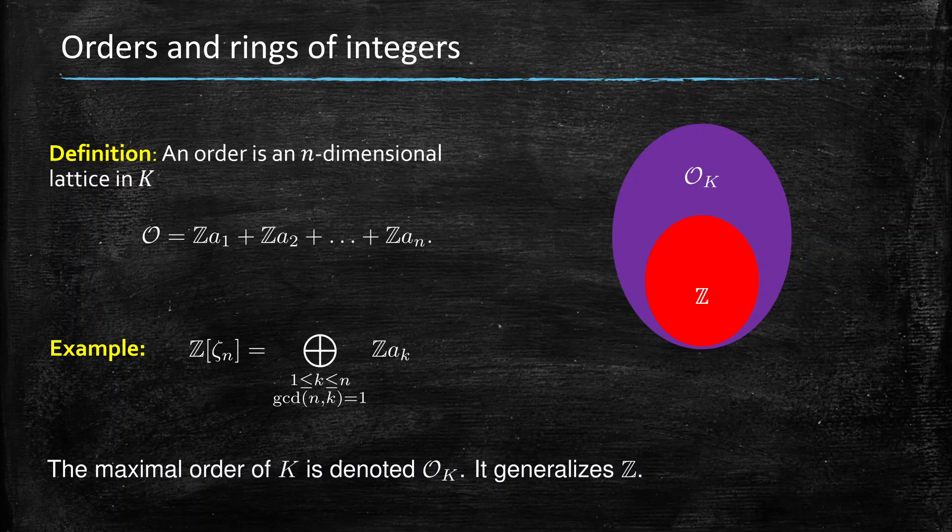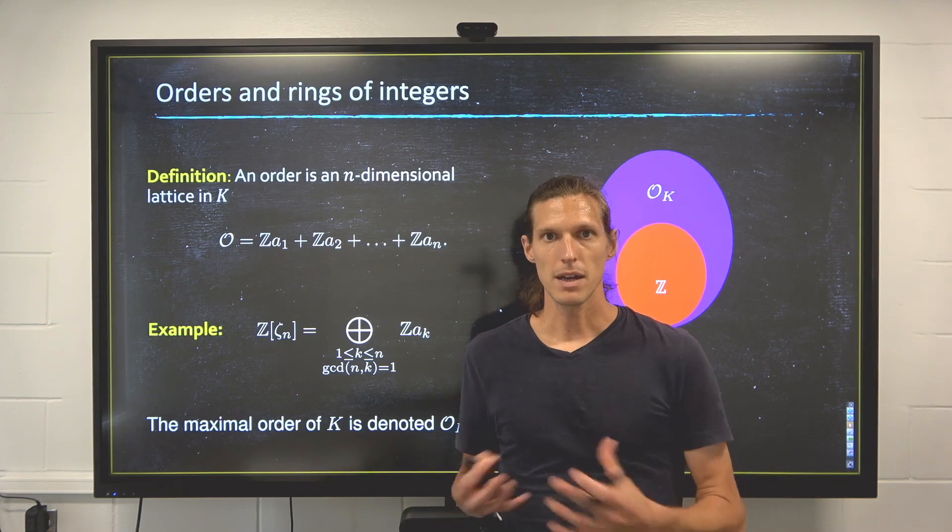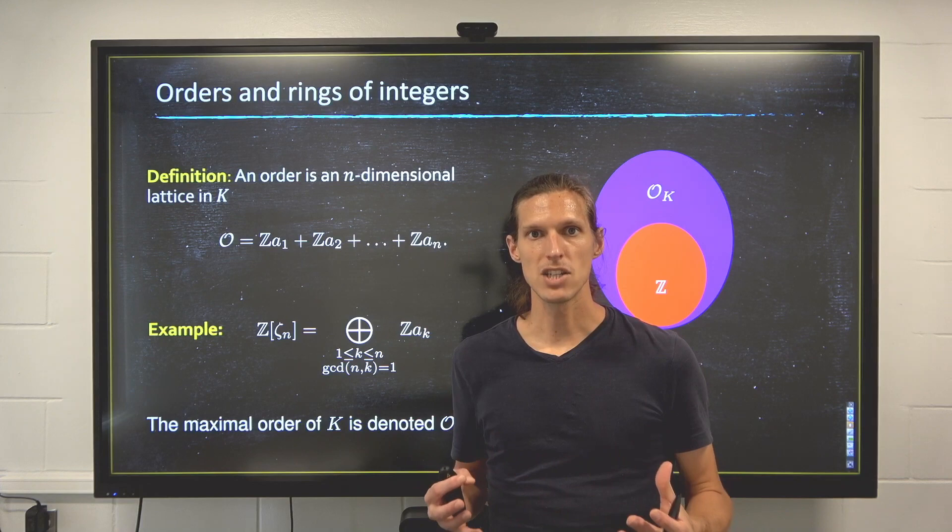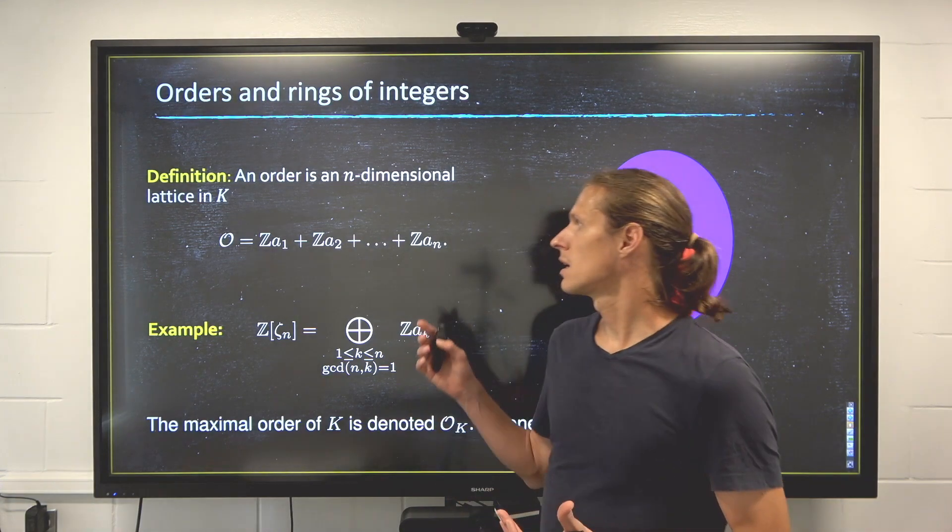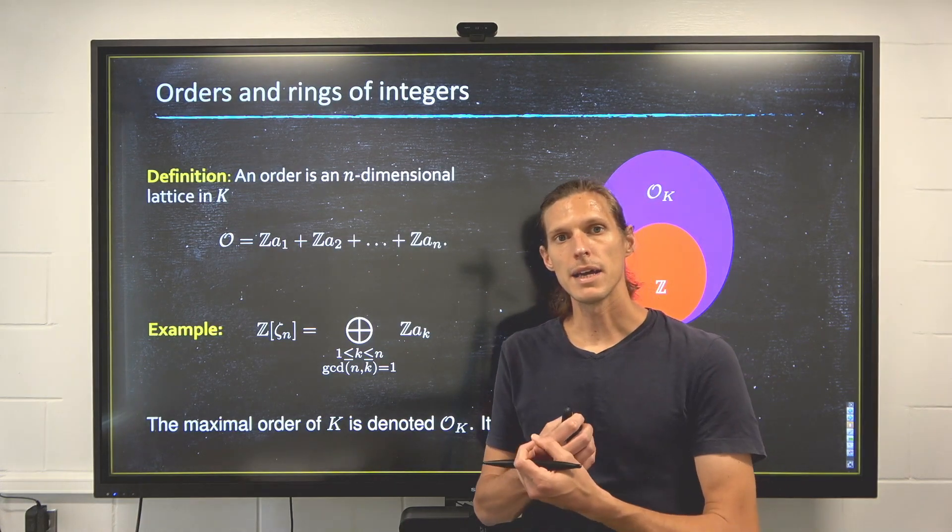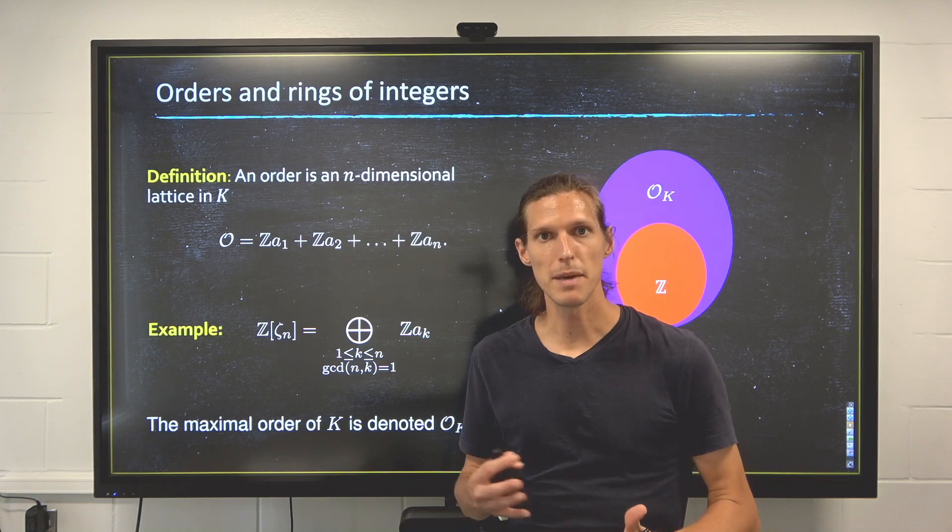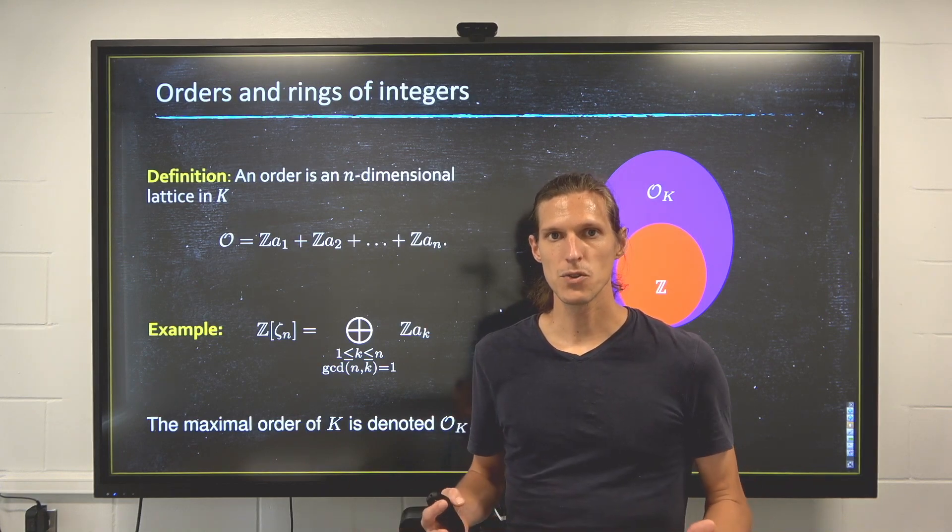Now another very important notion is the orders. So an order is a lattice inside of my field that happens to be a ring and that has dimension n. So an order is always defined by n different linearly independent elements in K, so it's always a basis of K. And it's also a ring.